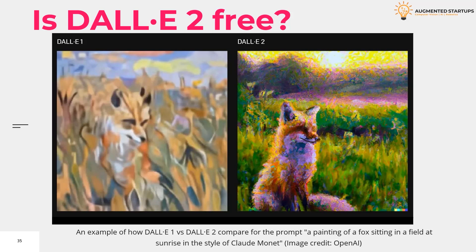New image generations return four images; edits and variations return three. Credits will be refilled each month on a descending scale — 50 in the first month, then 15 per month after that. Users will be able to buy additional credits at $15 for 115 credits, enough to generate 460 images. OpenAI has also invited artists who need financial assistance to apply for subsidized access.